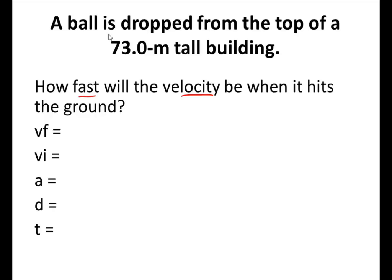Alright, once again, a ball is dropped from the top of a 73 meter tall building. Well, I have my displacement here. My displacement is 73.0 meters. We all know that acceleration is going to be negative 9.8 meters per second squared. That's the acceleration of gravity here on Earth. The initial velocity, well, when you drop a ball, initially it's in your hand, and therefore it's going to be at rest. So therefore, we're going to have 0 meters per second as our velocity.